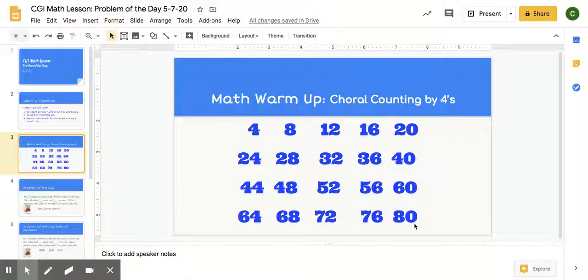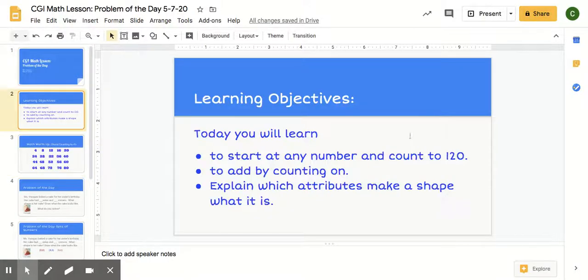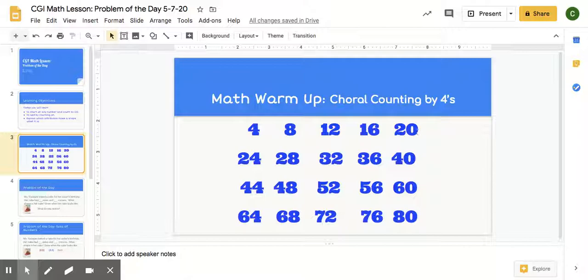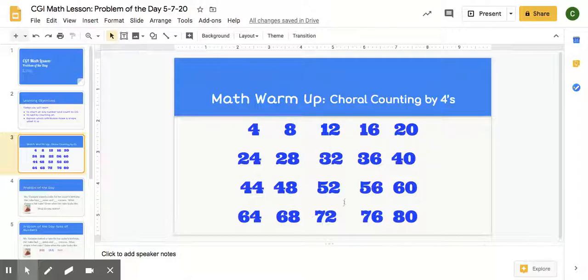What do you notice? Let's think. Oh yes. The last row has zeros in the ones place, correct? Oh yes. The first row has four in the ones place. Sorry, the zeros are in the ones place. Yes, eights are also in the ones place. The twos are in the ones place. And the sixes are in the ones place.